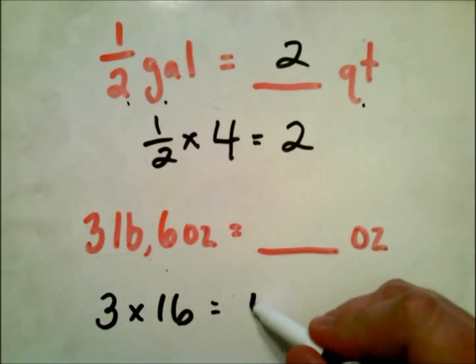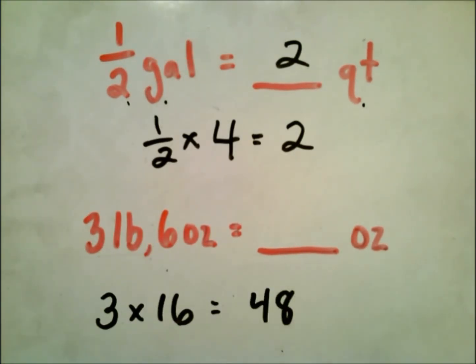But we're not done. I could write 48 there, but I know my answer would not be correct because I have this 6 ounces here. So I need to add 6 ounces to my 48 ounces here, because right now all we've calculated is the three pounds. So 48 plus 6 is 54 ounces.